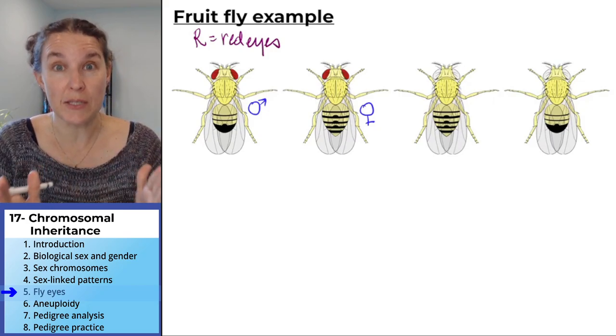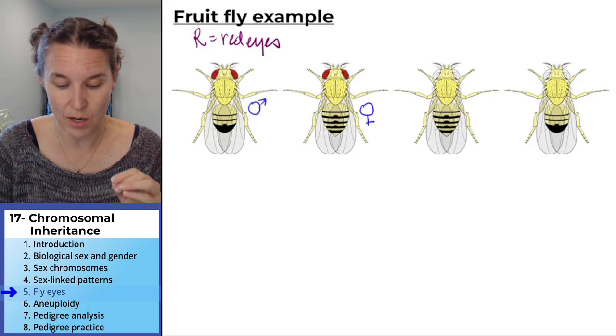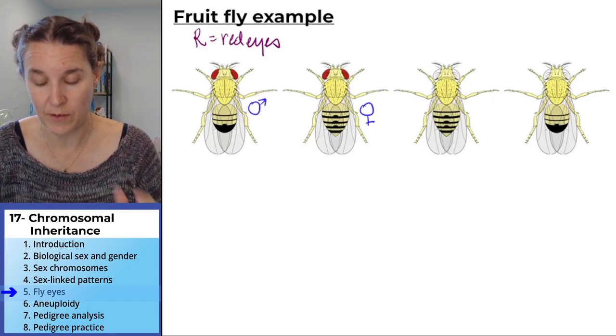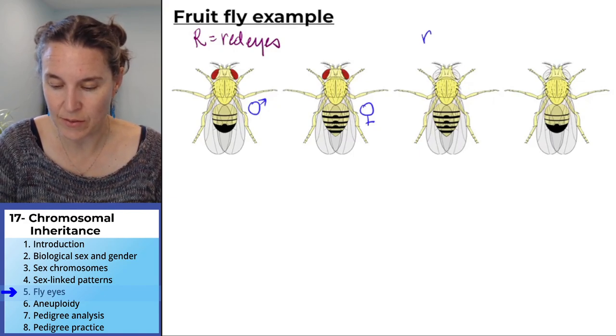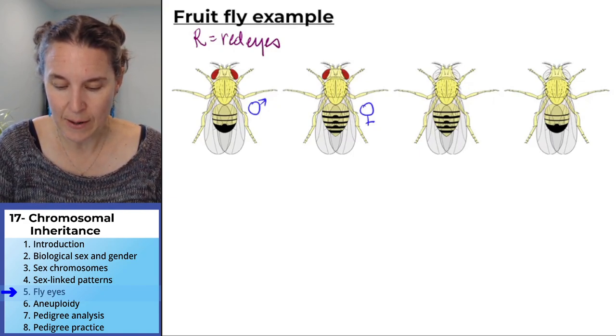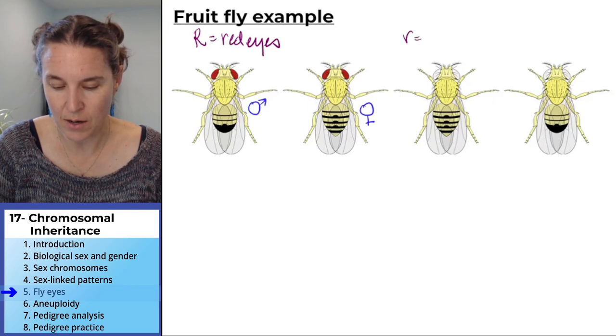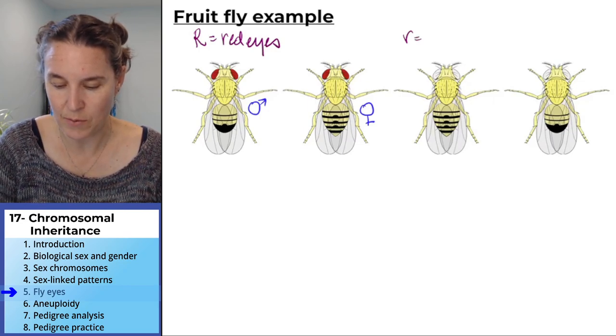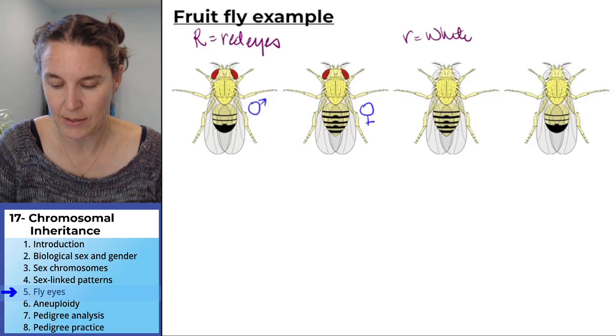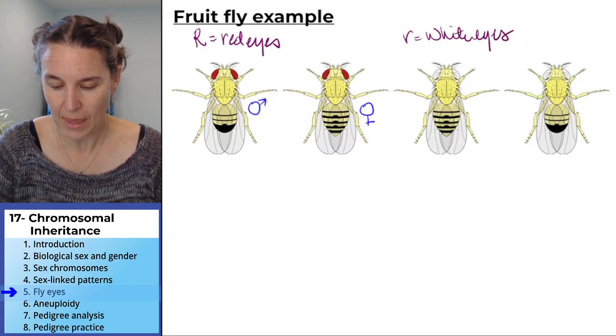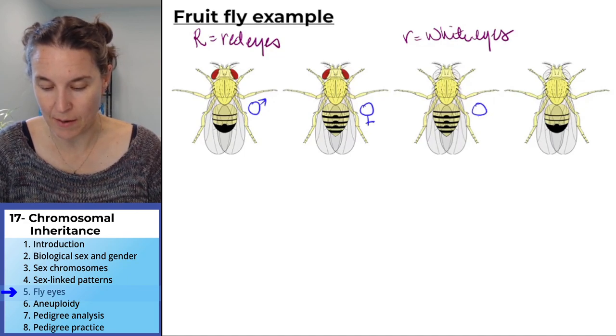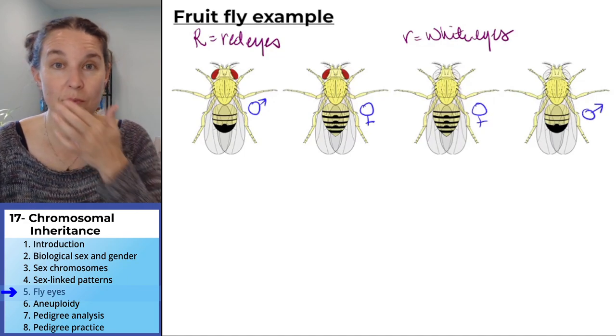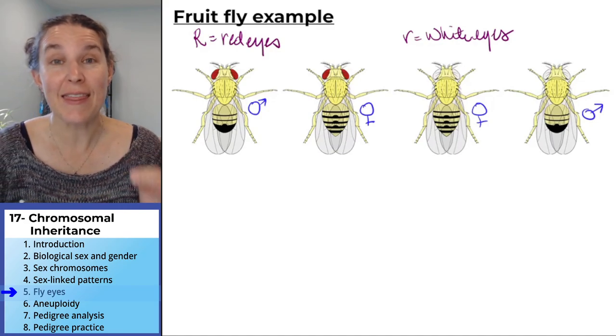The phenotypes of flies here are a red-eyed male, a red-eyed female, and then we have this recessive trait that I'm going to call little r, and that's white eyes. You can see that we have a white-eyed female and a white-eyed male.